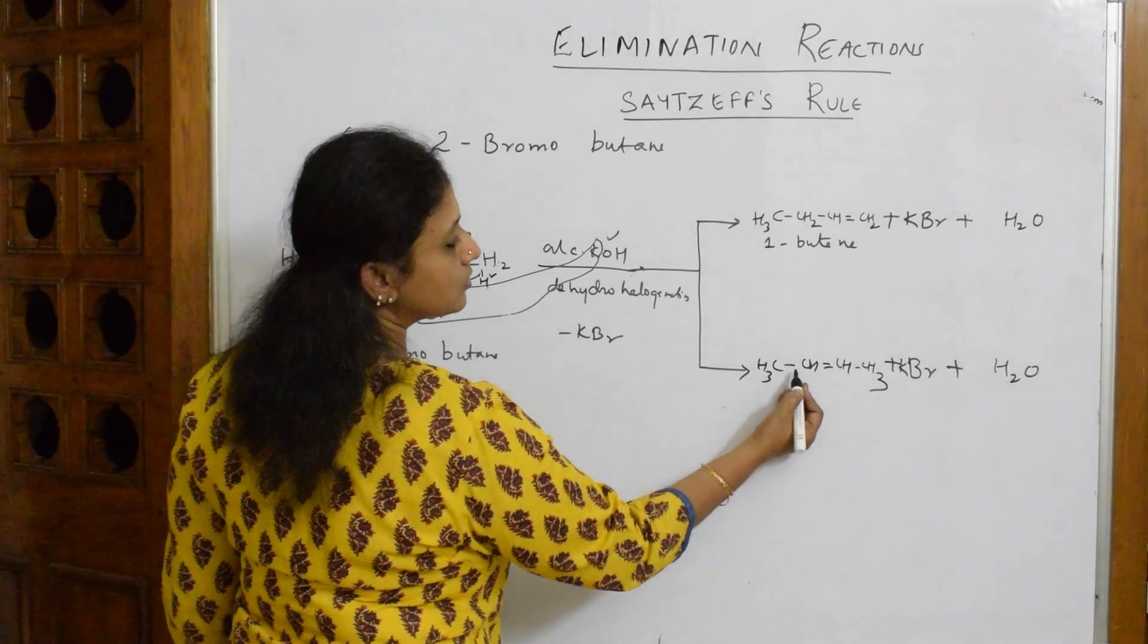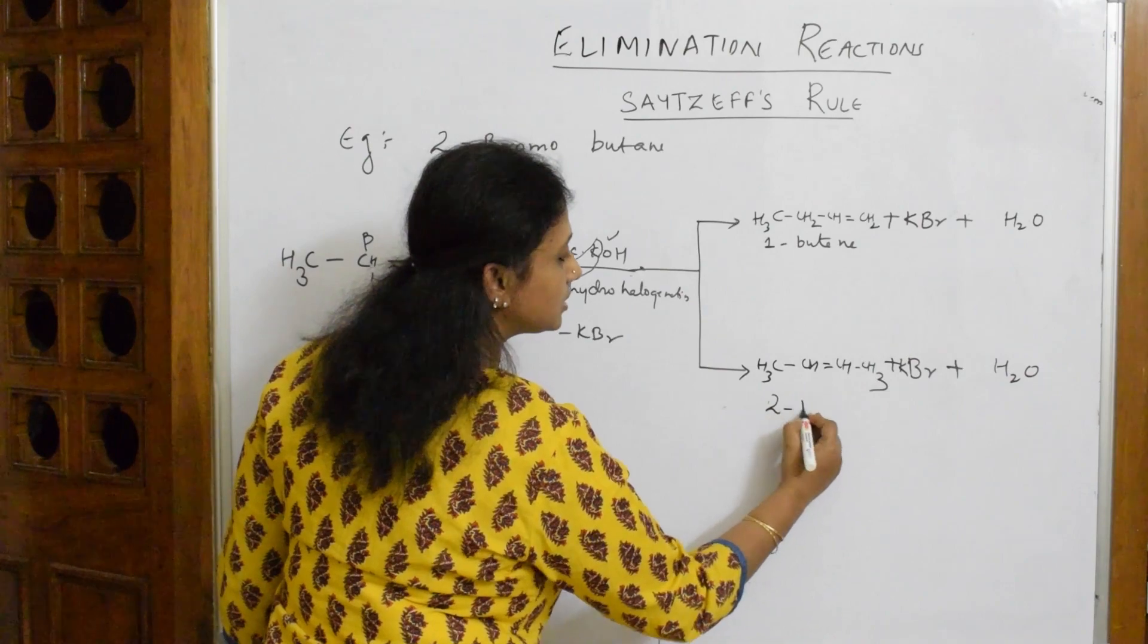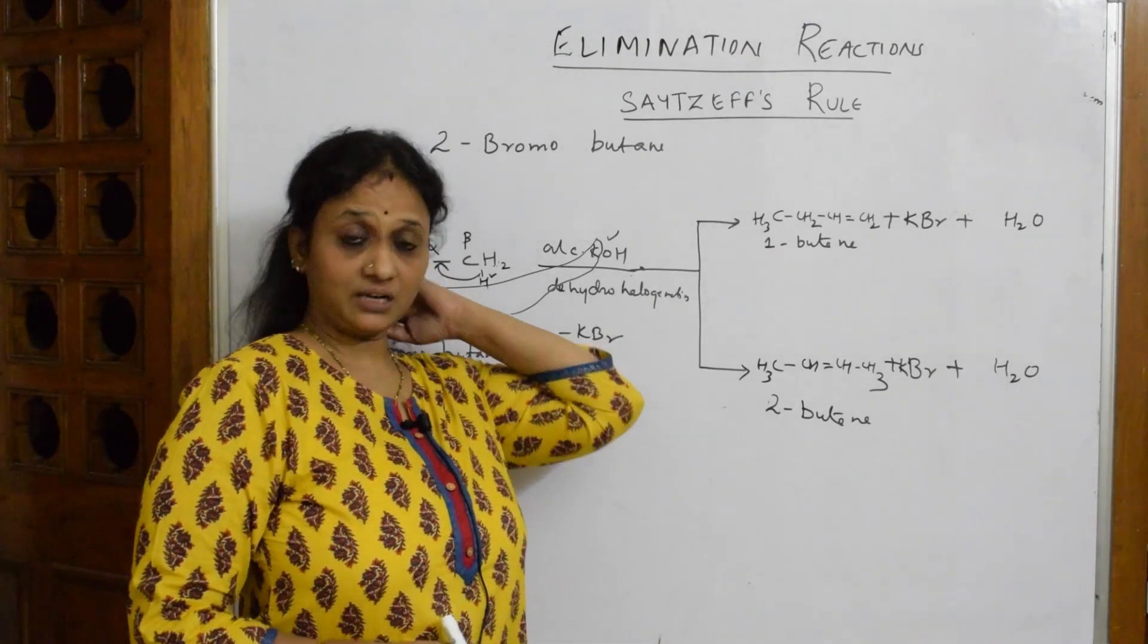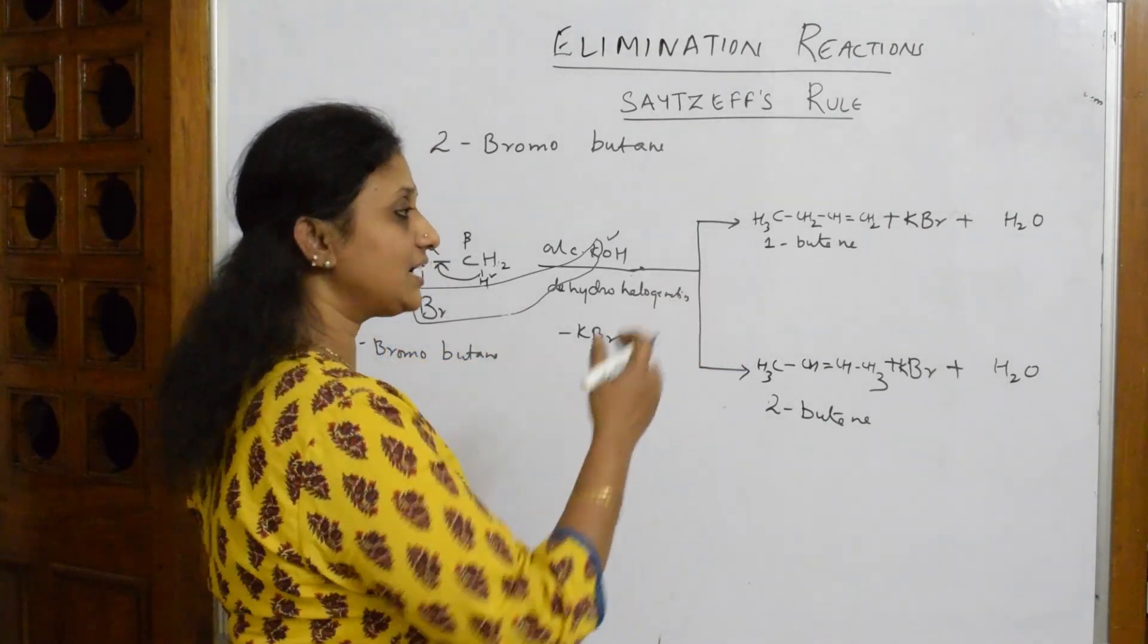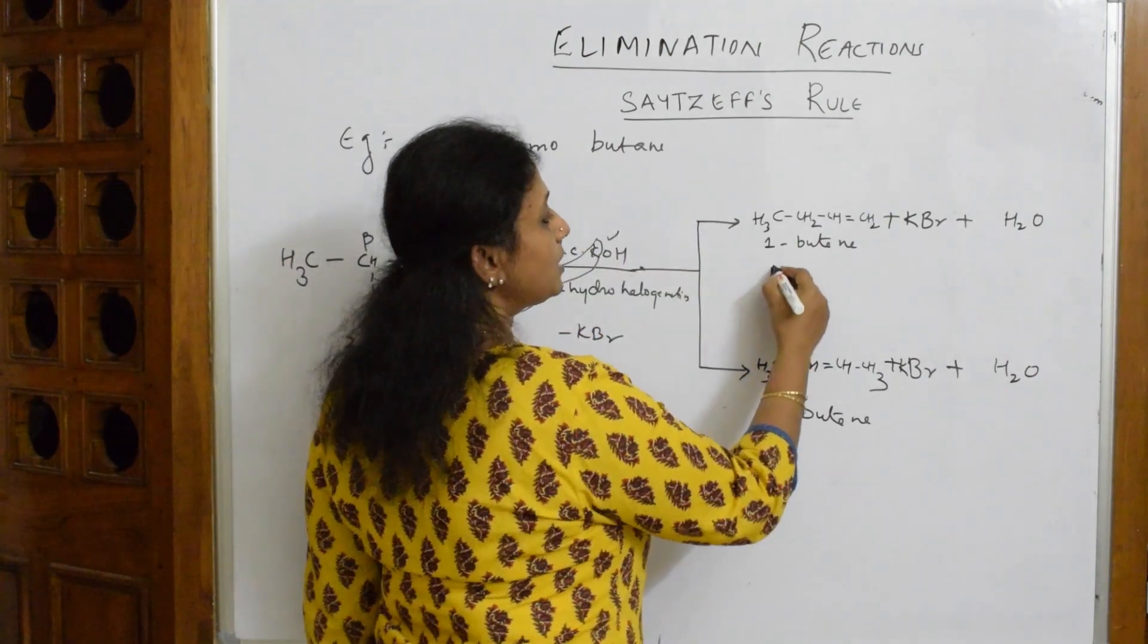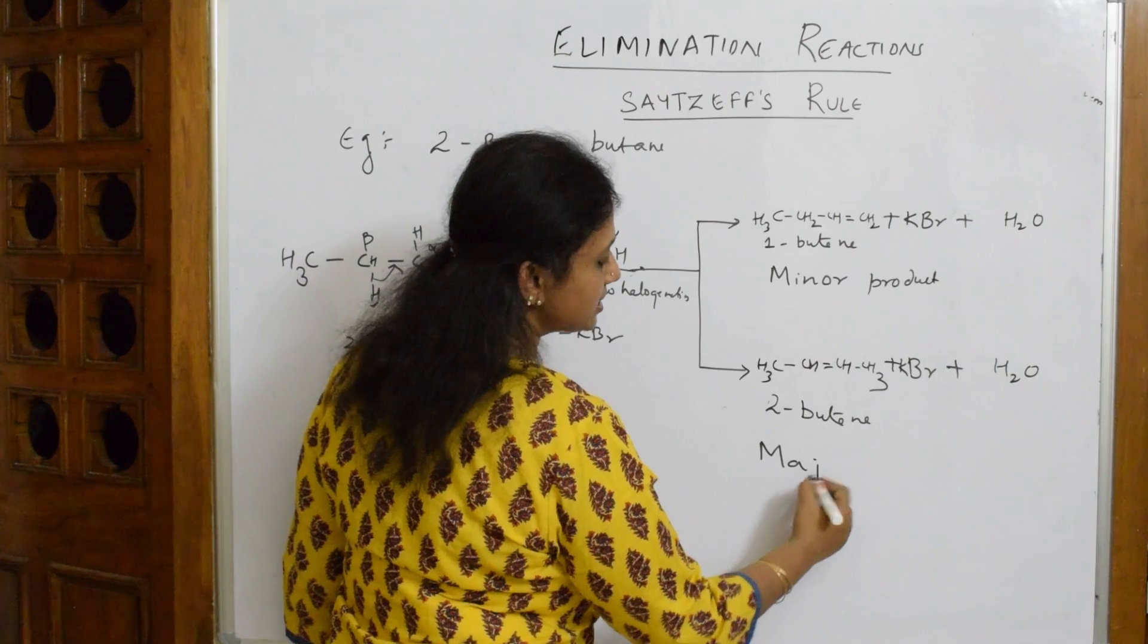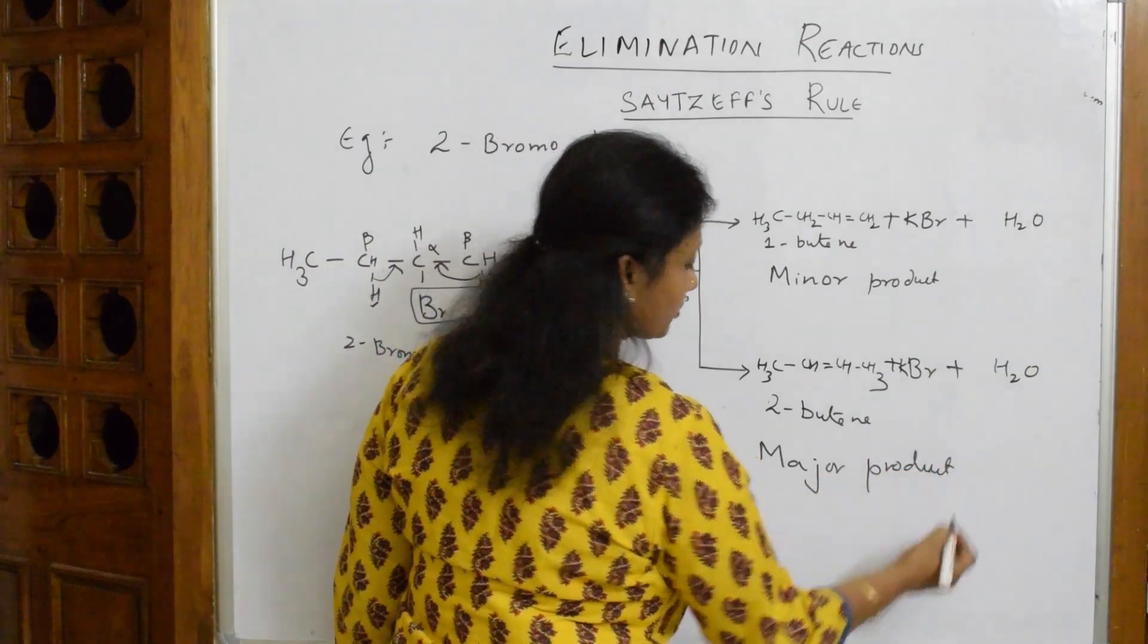I got 2-butene. I've got two products: one product was 1-butene, the other product is 2-butene. When I see the percentage of major and minor products, 1-butene is a minor product and 2-butene is a major product. This is Saytzeff's Rule.